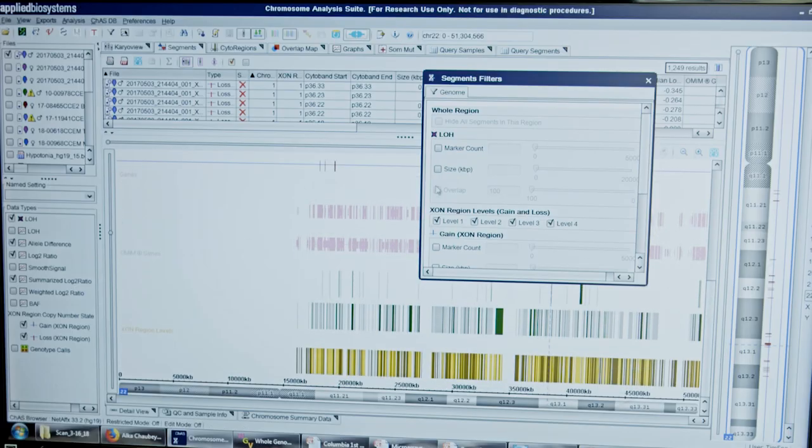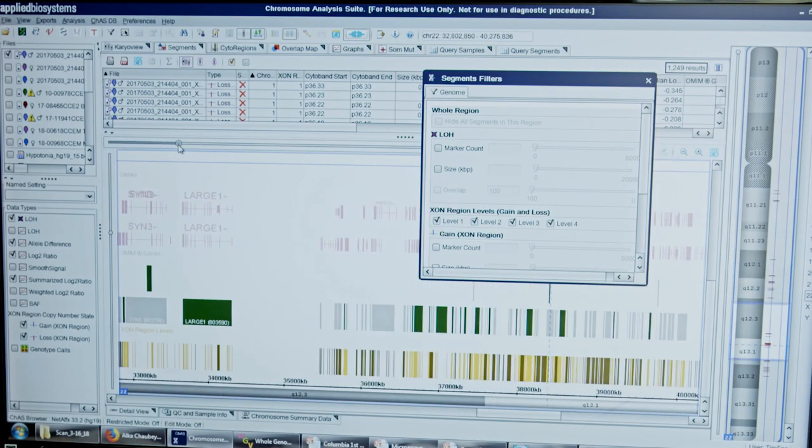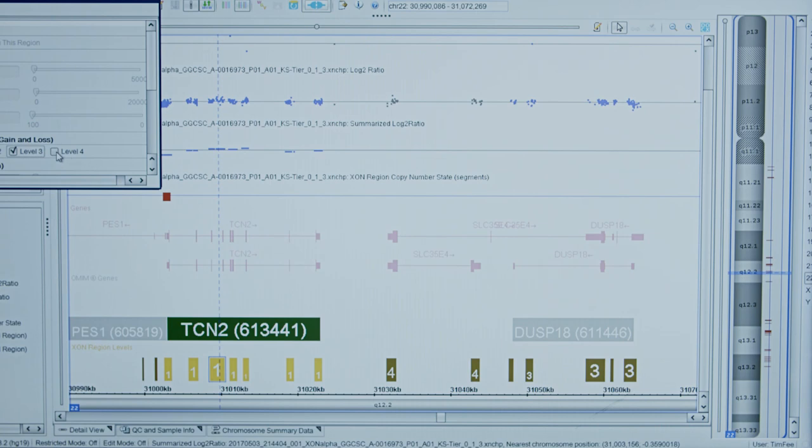The Chromosome Analysis Suite software is extremely flexible and easy to use. It allows me to look at all the genes in four tiers based on relevance. With click of a button, I can either look at tier 1 or tier 2 or all the genes on the array platform.